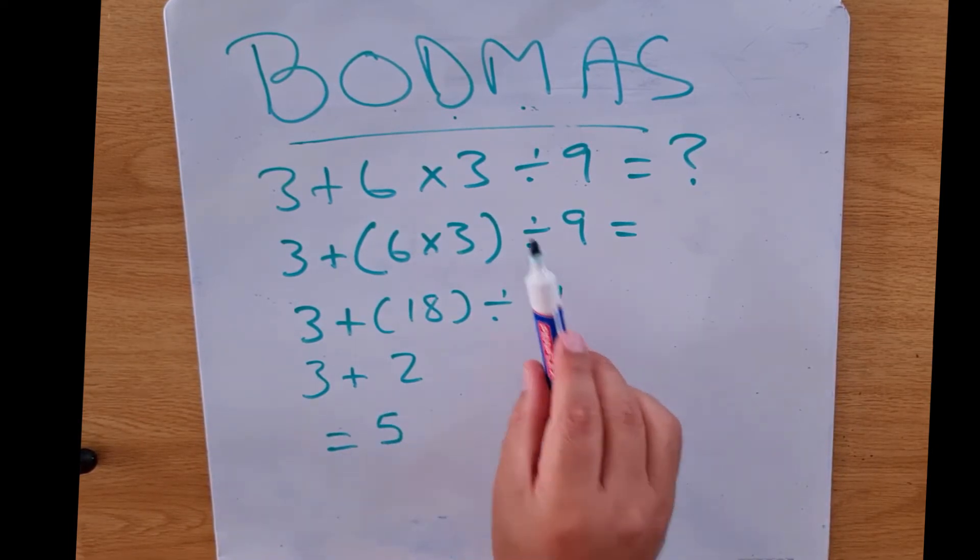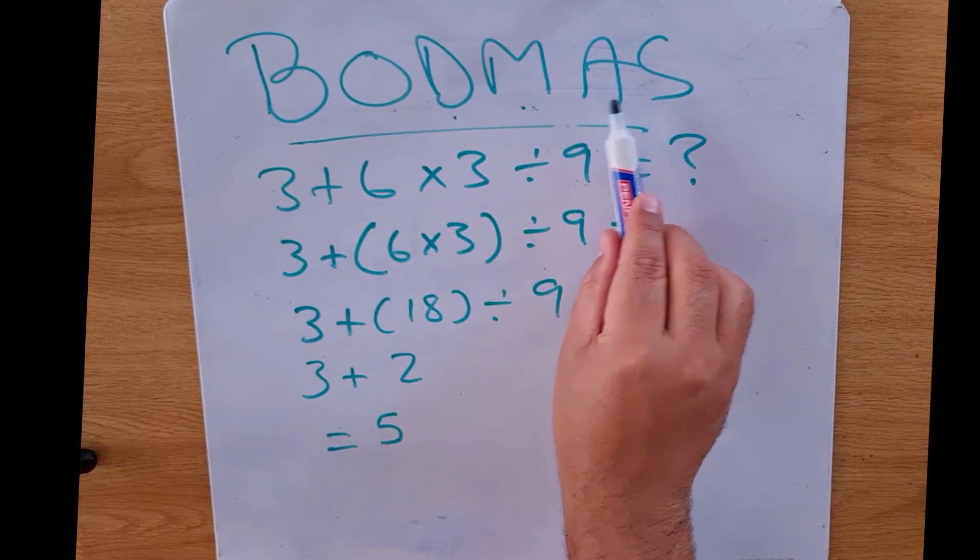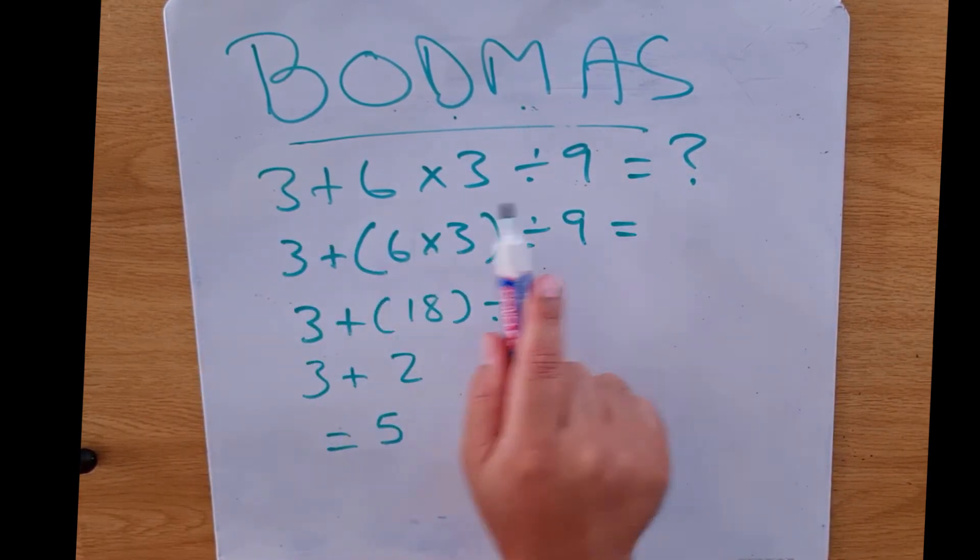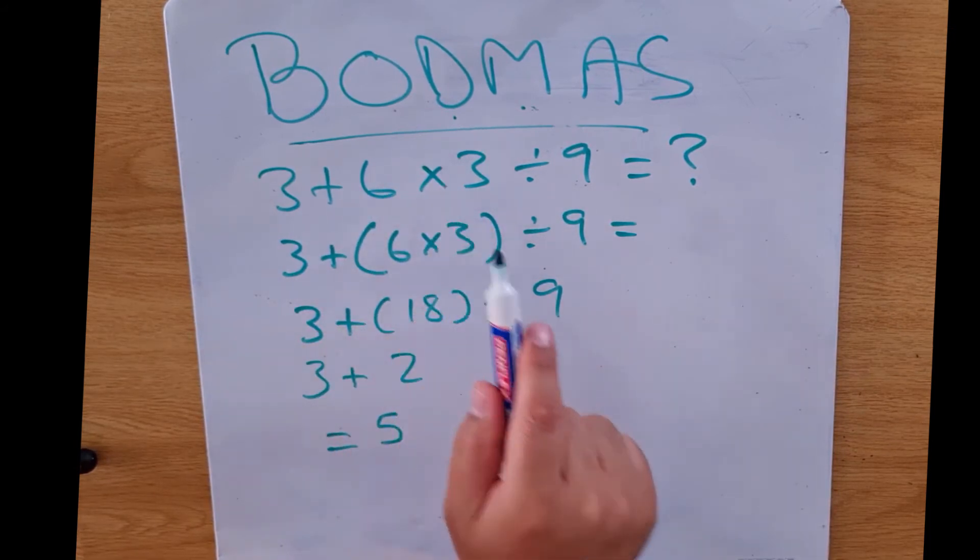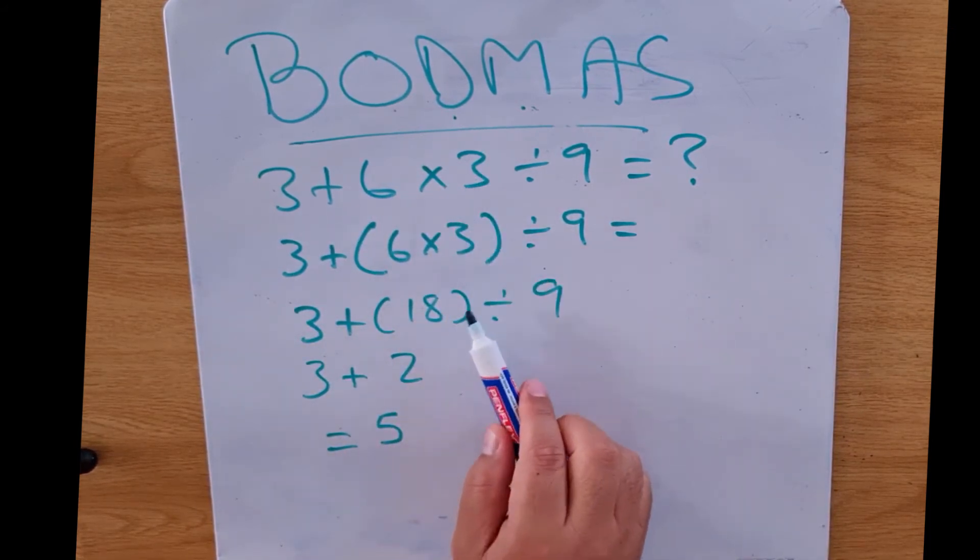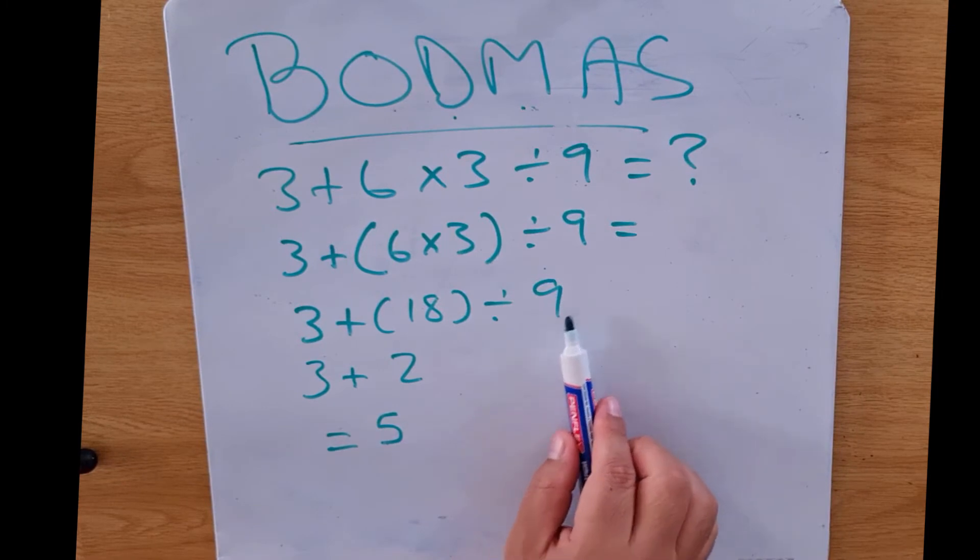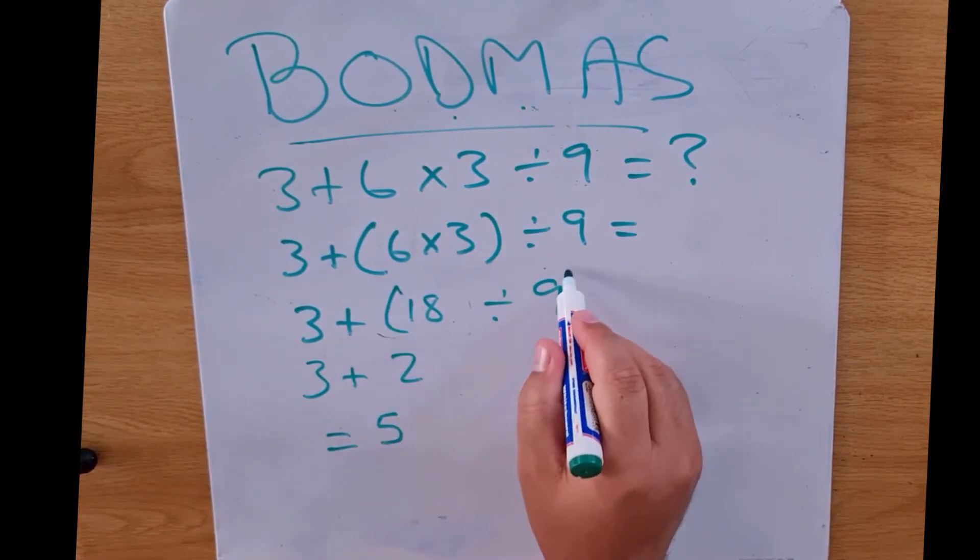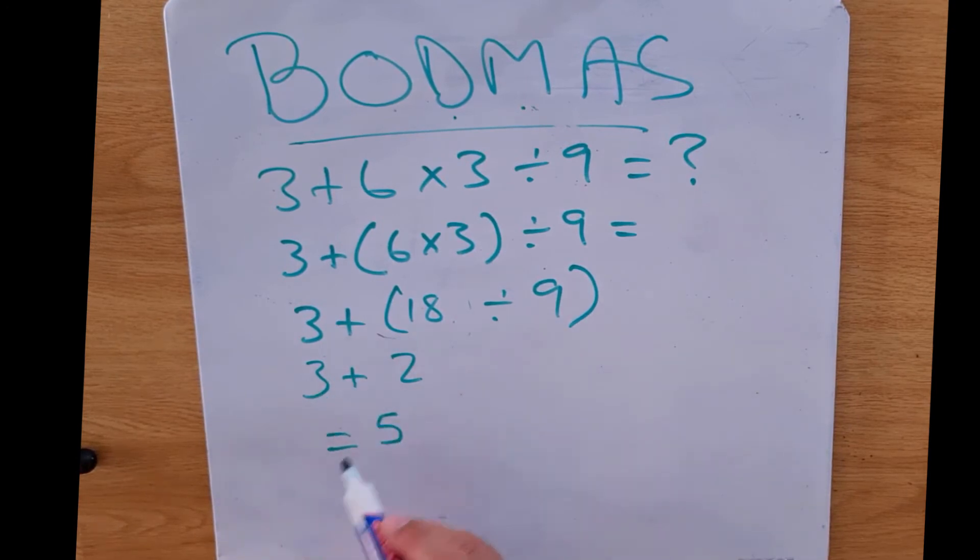So just bear in mind that even though when we look at BODMAS it's got division, multiplication, we implement that from the left to the right. The first thing that we find is multiplication and we do that, then we implement division. So we implement it and then we finish off our sum.